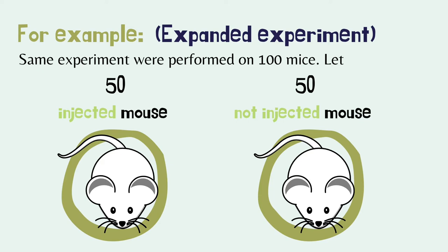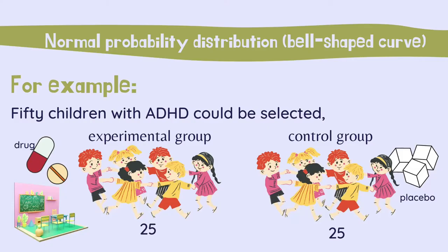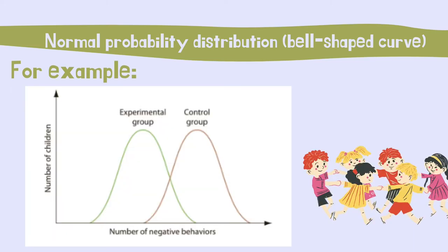Such a result would constitute much stronger evidence that the injected substance was carcinogenic. The normal probability distribution, or bell-shaped curve, resembles the method of concomitant variation. For example, 50 children with ADHD could be selected, with 25 placed at random in the experimental group and 25 in the control group. The children in the control group would be given a sugar pill. One curve would represent the experimental group and another the control group. Assuming the drug is effective, the two curves would be displaced from one another but would probably overlap in part.